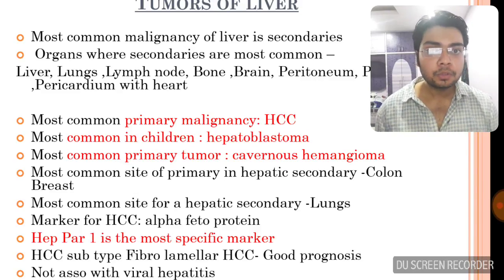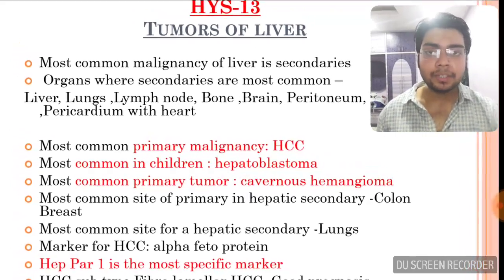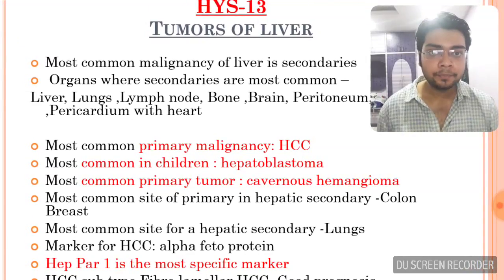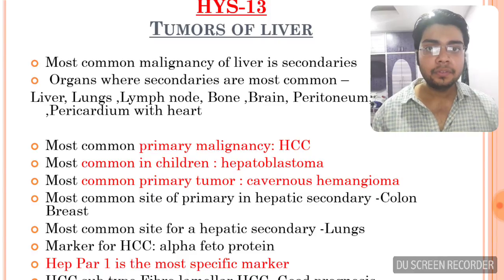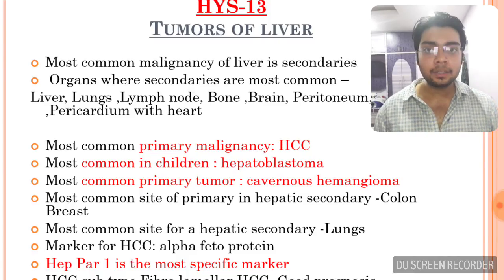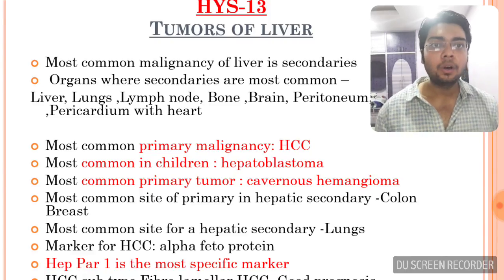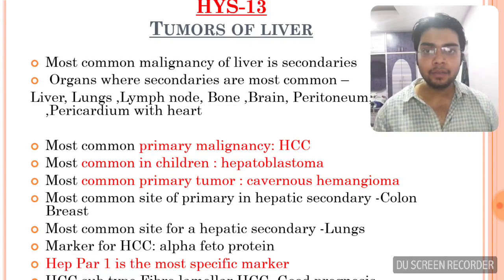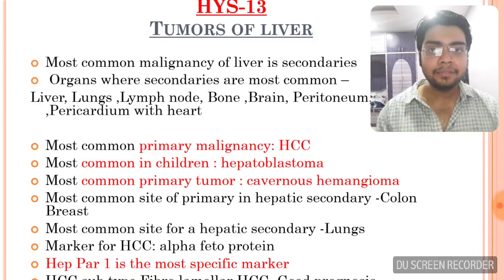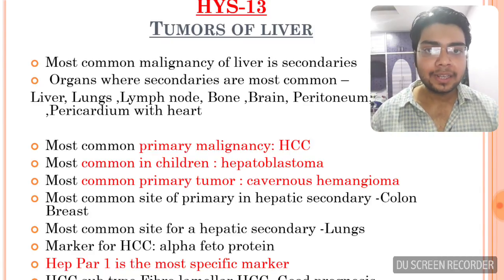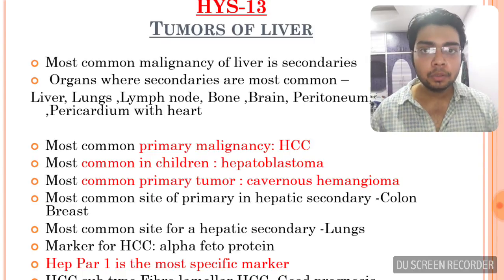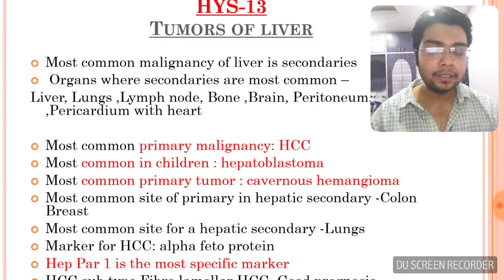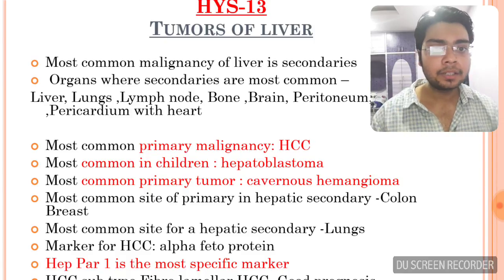Since secondaries are most common, the most common primary malignancy of liver is hepatocellular carcinoma. The most common liver tumor in children is hepatoblastoma. The most common primary tumor overall of the liver is cavernous hemangioma. Every word here is important: cavernous hemangioma is the most common primary tumor, but the most common primary malignancy — not tumor — is hepatocellular carcinoma.